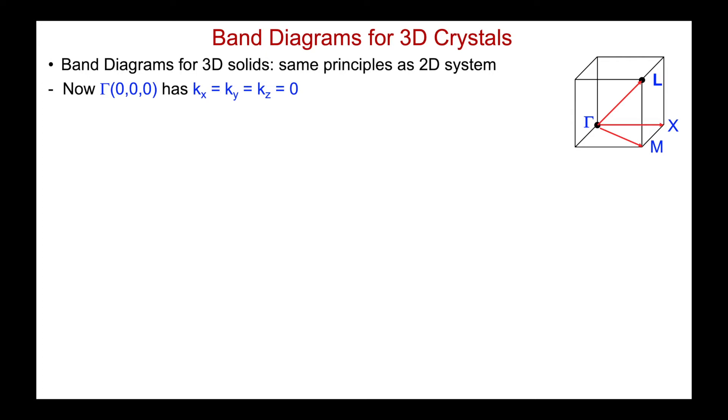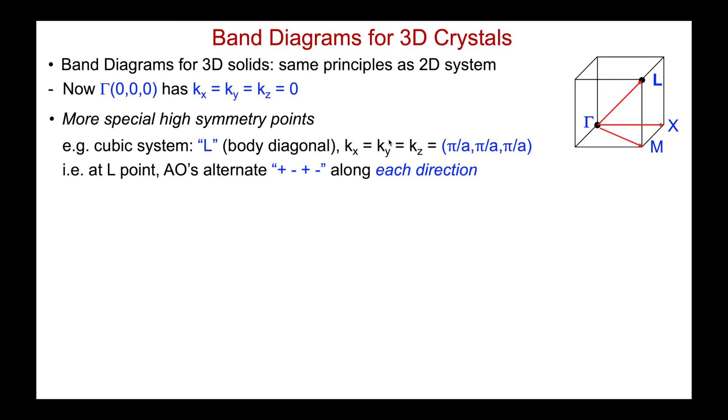I think now we can just start to interpret band diagrams for 3D systems. The principles are identical to that that we've covered for the 2D system. It's just we've got another vector. We've got kx, ky and kz and things can get tricky. Tricky not only to calculate but also to visualize. Let's just make some key points. Now my gamma point, all of that means is along every primary direction, x and y and now z, there are no sign changes in the atomic orbitals. That's the crystal orbital that's formed. 0, 0, 0.